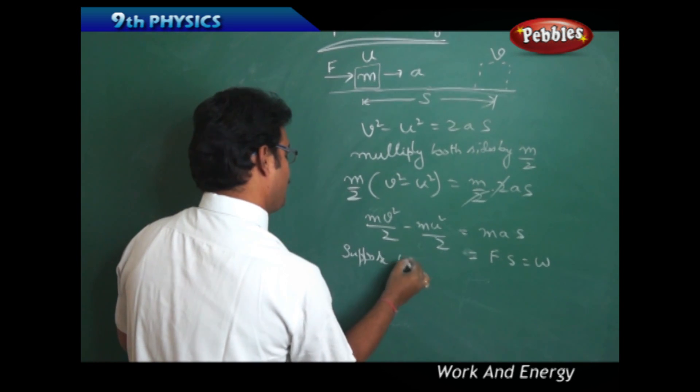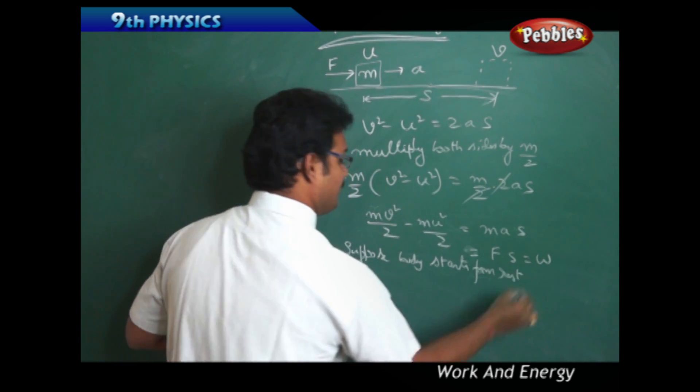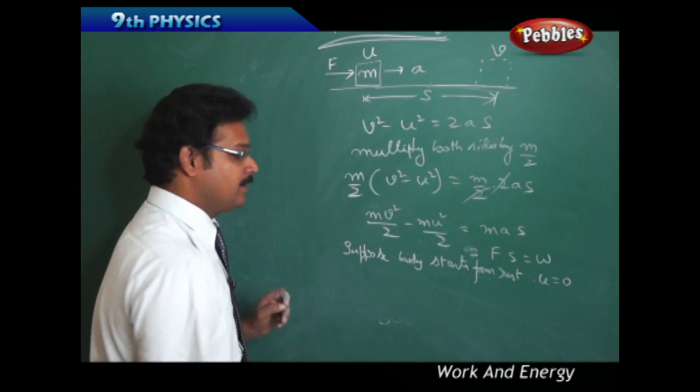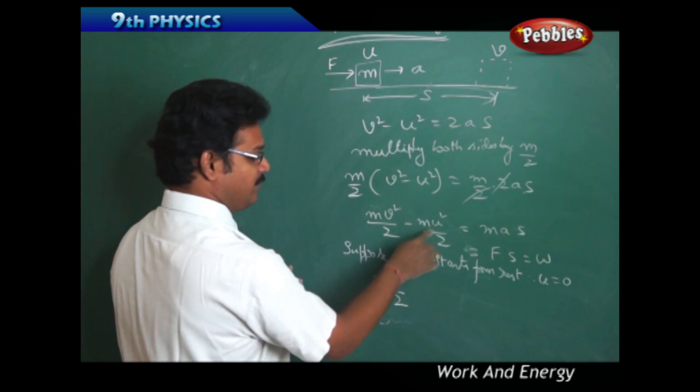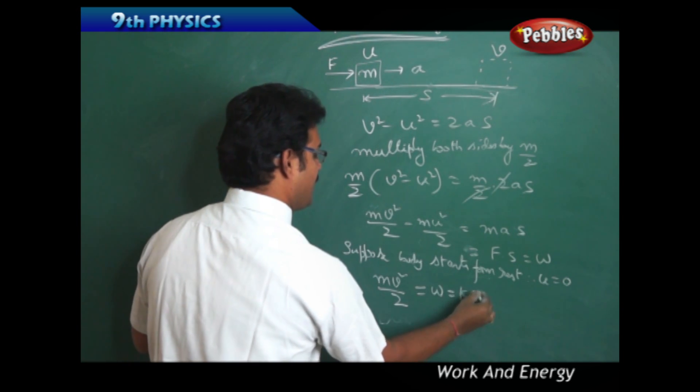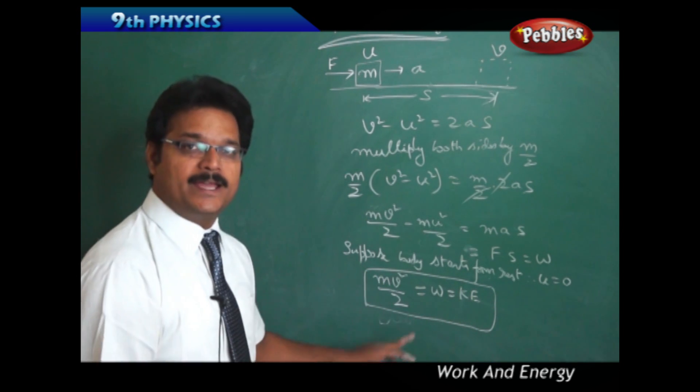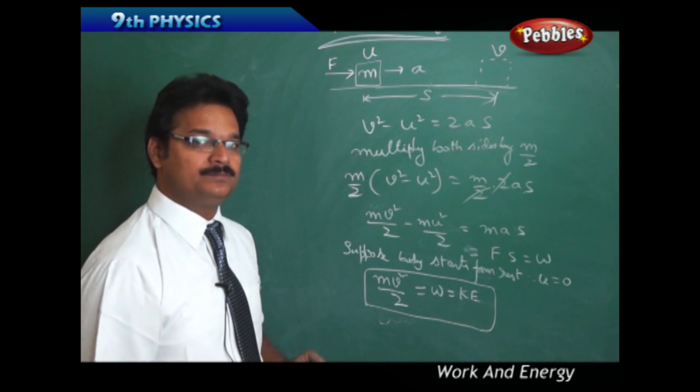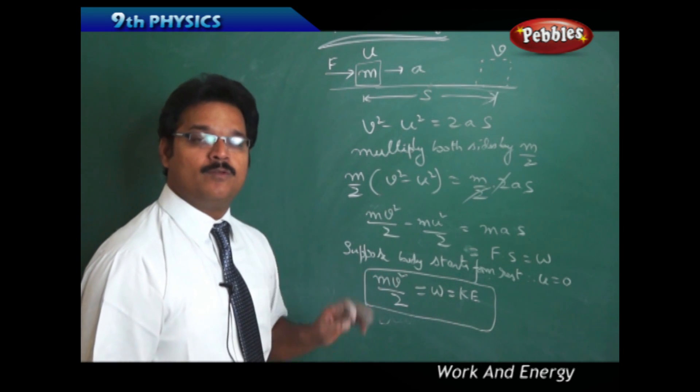Suppose the body starts from rest, then what happens? Initial velocity U = 0. Then this U = 0, so we got only MV²/2, where MU²/2 is 0. So MV²/2 equals work done, and this is nothing but kinetic energy. So kinetic energy formula is MV²/2, or you can say half MV². Another important point you have to observe here: kinetic energy and work done both are the same.